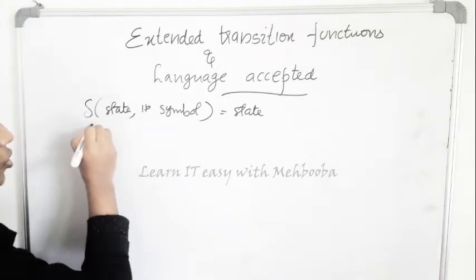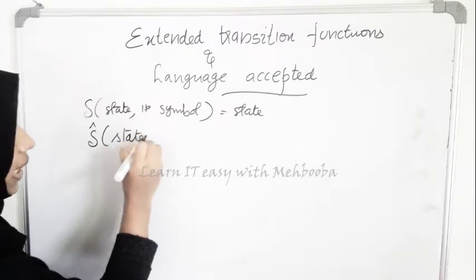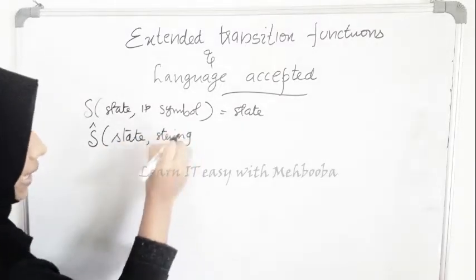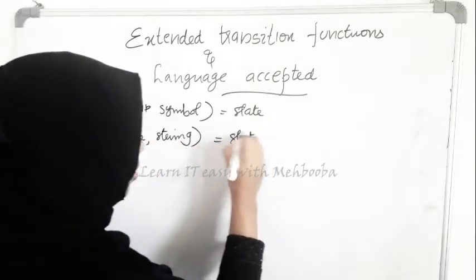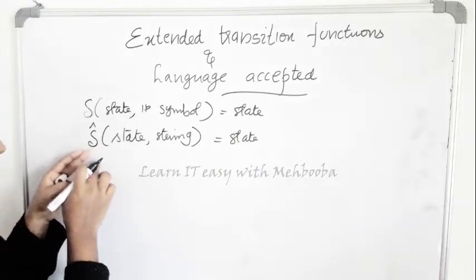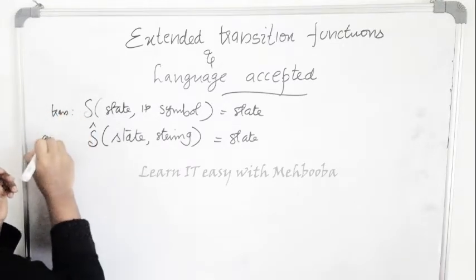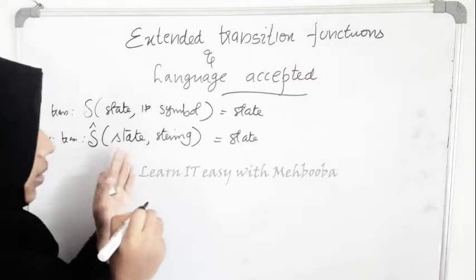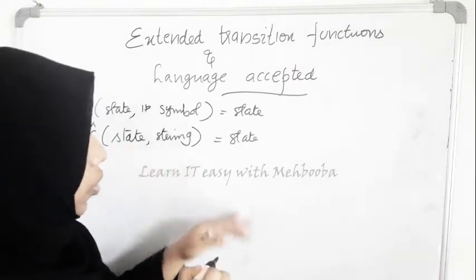But the extended transition function, denoted by delta-cap, takes as its arguments a state and a string instead of an input symbol, and outputs a state. So that's the difference. The notation is delta-cap for the extended transition function.